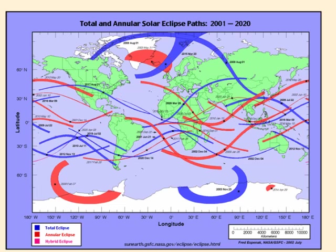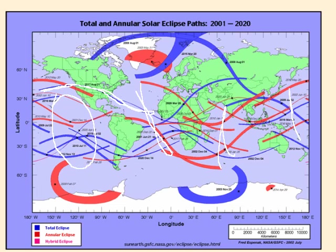The next time a total solar eclipse is visible from North America is this blue line in 2017, in the summer. It will come right across the Midwest — the umbra will — and most of the U.S. will see a partial eclipse during that time. We don't have many eclipses visible, and most eclipses occur over the oceans since Earth is mostly covered by water.